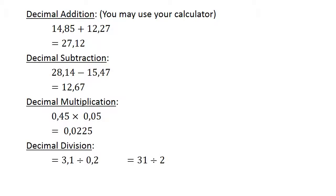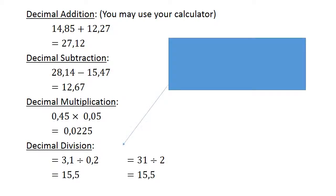Decimal division. 3.1 divided by 0.2 equals 15.5. Again, we multiply both with 10 to get whole numbers. 31 divided by 2 equals 15.5.